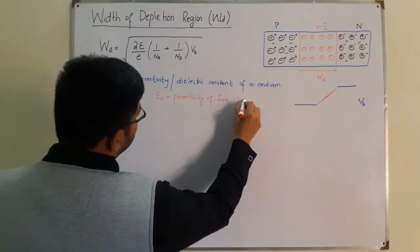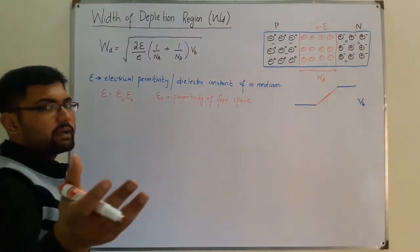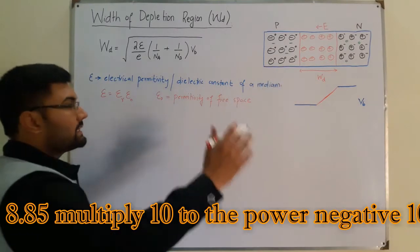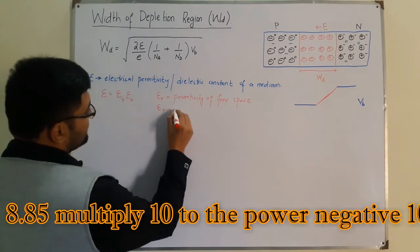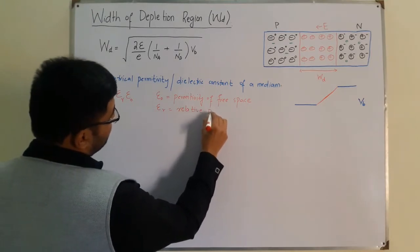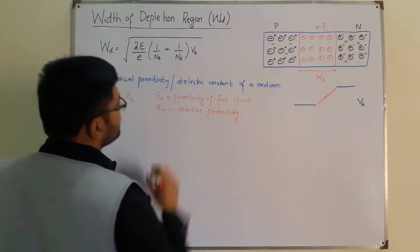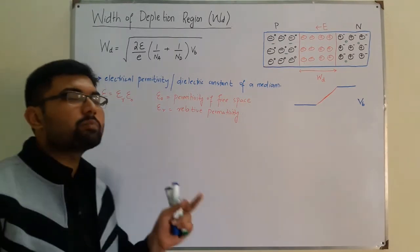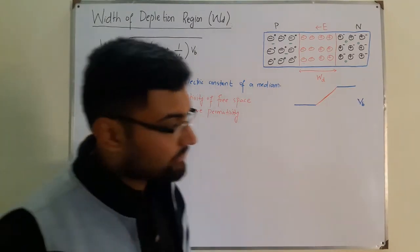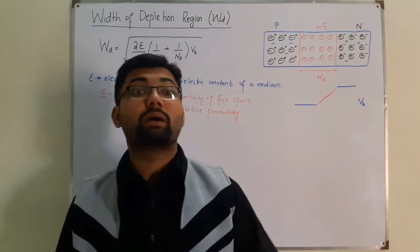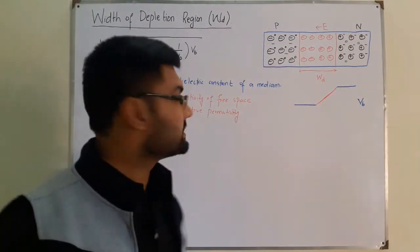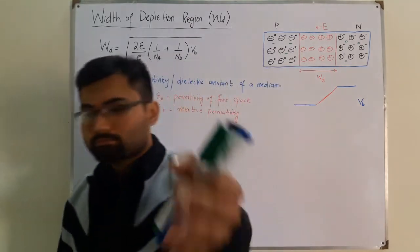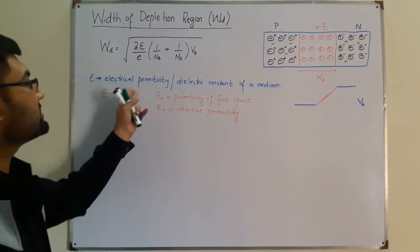Epsilon naught is the permittivity of free space, and its value is 4 pi into 10 to the power negative 17, or is it 8.85 into 10 to the power negative 17. I'm confusing the epsilon permittivity and permeability, but you know this value right. Epsilon r is the relative permittivity of a medium. If you're given the relative permittivity, you can find the electrical permittivity of any medium like this.